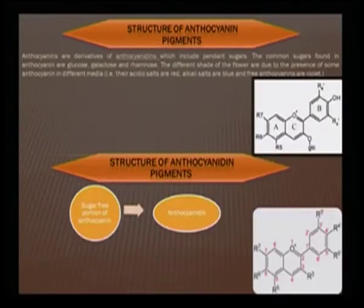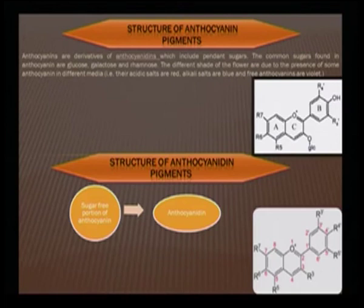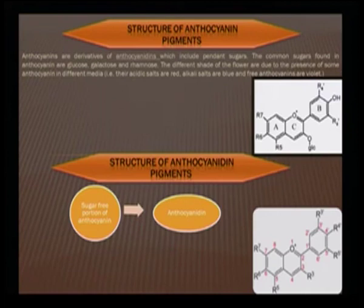Looking at this slide, you can see that the ABC rings are connected, and there is a sugar pendant hanging — OGLC. This OGLC represents the sugar moiety, and this sugar could be glucose, galactose, or rhamnose. It could be other sugars also, but predominantly these are the three sugars naturally present along with the anthocyanidin. When these include the pendant sugar, the anthocyanidins are then called anthocyanins.